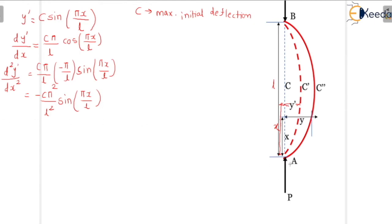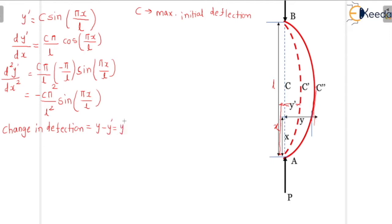At the crippling load, the final shape of the column is A-C''-B. Let y be the final deflection at any distance x from A. The change in deflection is y* = y − y', where y* is the difference between final and initial deflection.